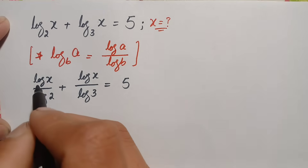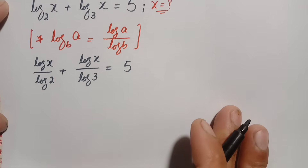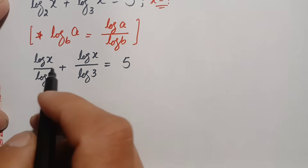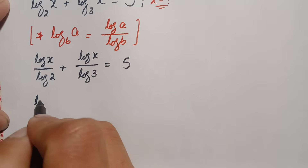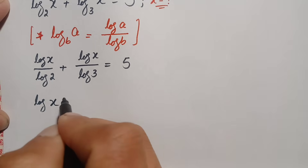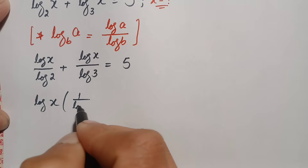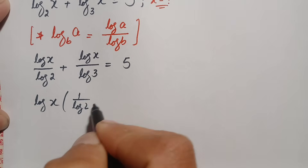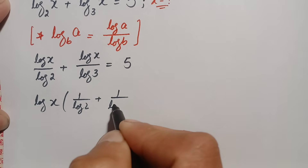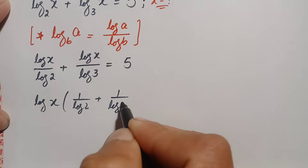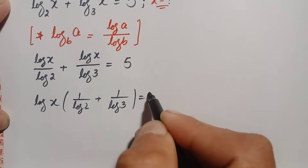In the left hand side, log of x is common in both numerators. So we take out log of x as a common factor. This becomes log of x times (1 divided by log of 2, plus 1 divided by log of 3) is equal to 5.